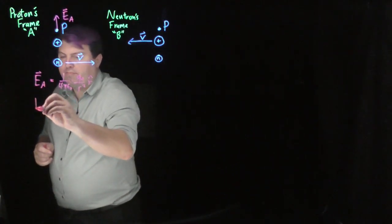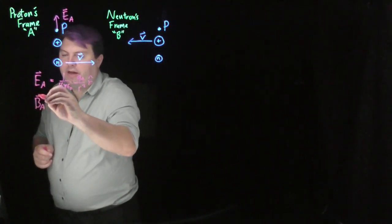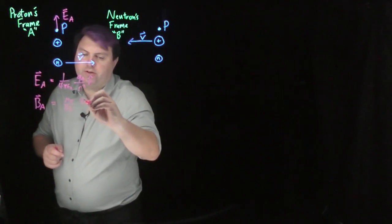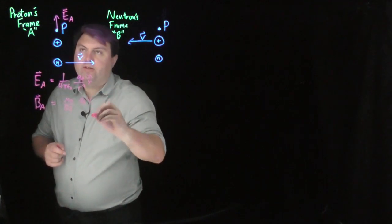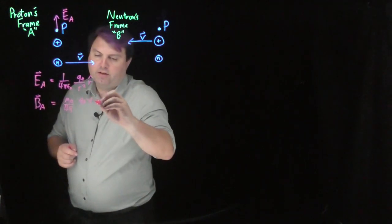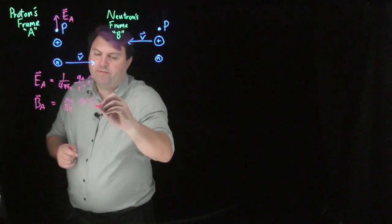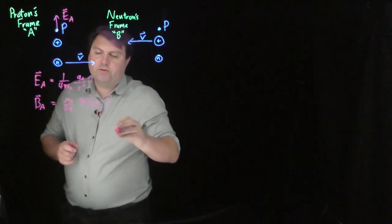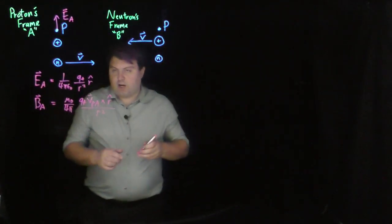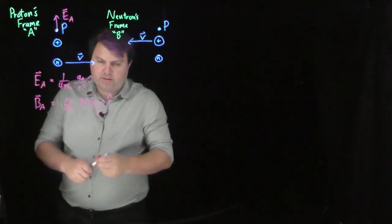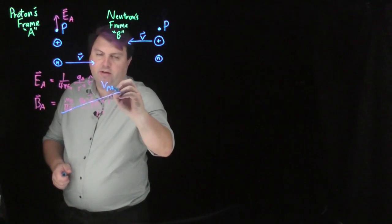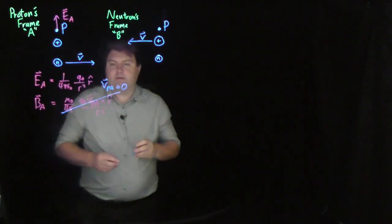And then our magnetic field in A is going to be mu naught over four pi, the charge of our proton, the velocity of our proton in the reference frame A crossed with this r vector, over r squared, but our proton's velocity in this reference frame is zero. So this entire B_A is zero.